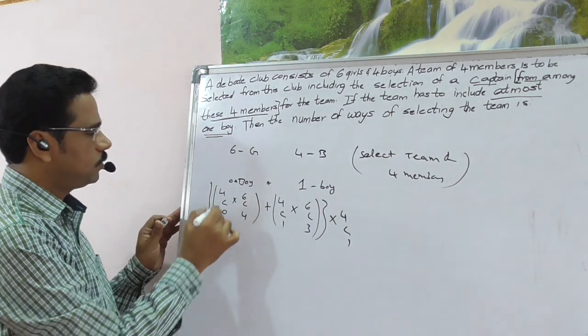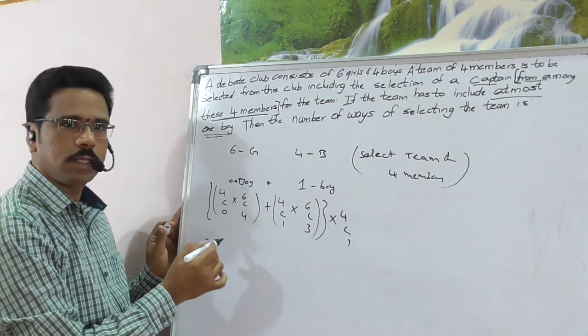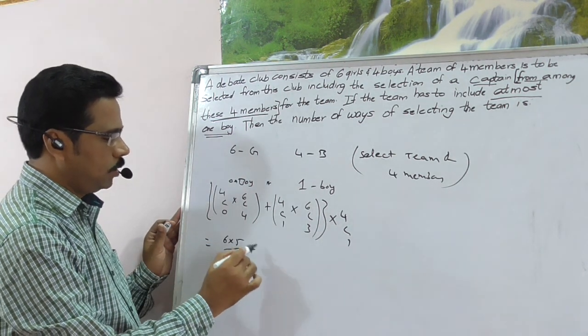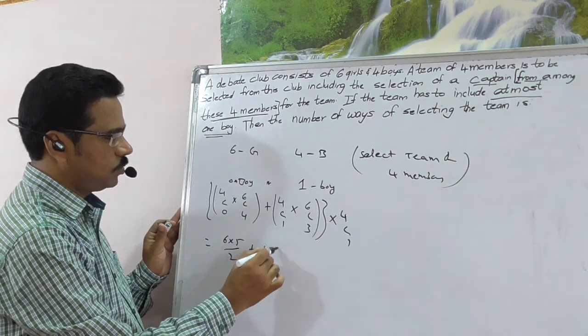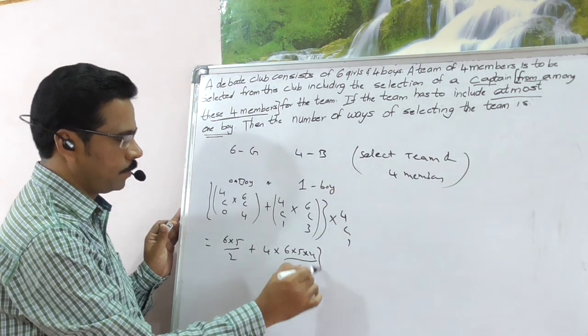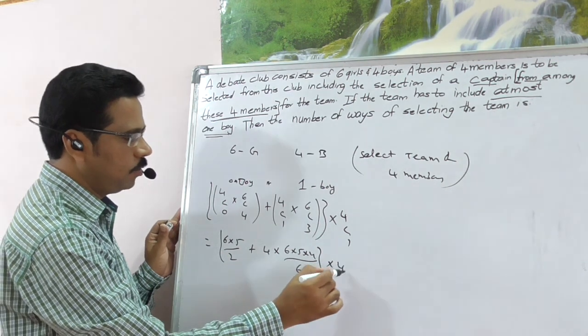Finish this one. Calculate this. 4C0 is 1. 6C4, that is nothing but 6×5 by 2, plus 4C1 is 4. 6C3, 6, 5, 4 by 3 factorial. That is 6 multiplied by 4.